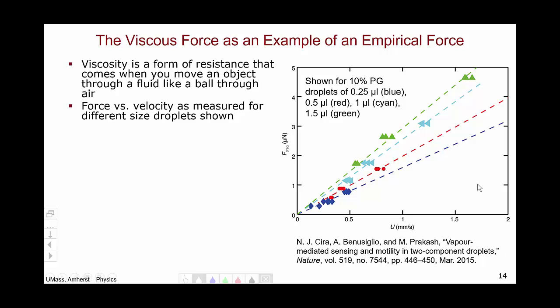Here, we have a paper from Nature, March 2015, showing the viscous force in micronewtons on a droplet as a function of the speed of the droplet in millimeters per second for different sized droplets: a quarter microliter in blue, half microliter in red, etc. We can see that the force of drag seems to depend linearly on the velocity. As the velocity increases, the amount of force also increases in a way that can be fit quite nicely with a line.